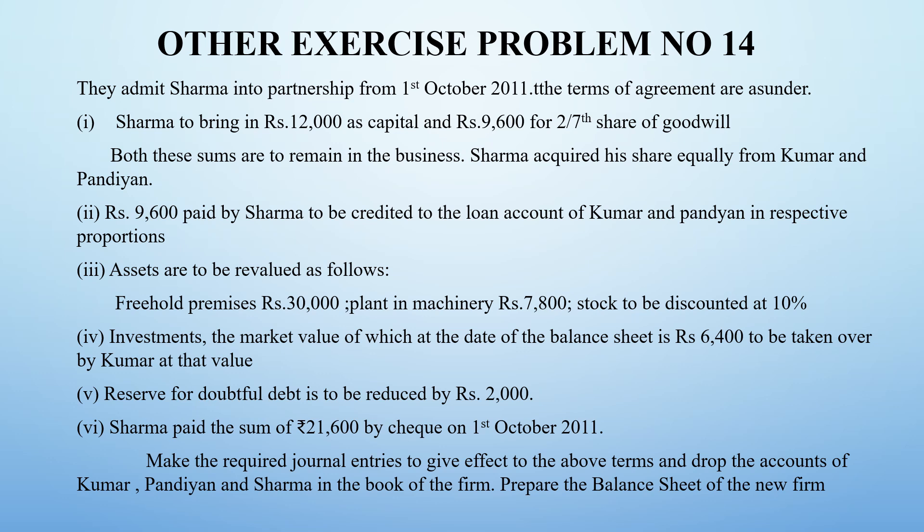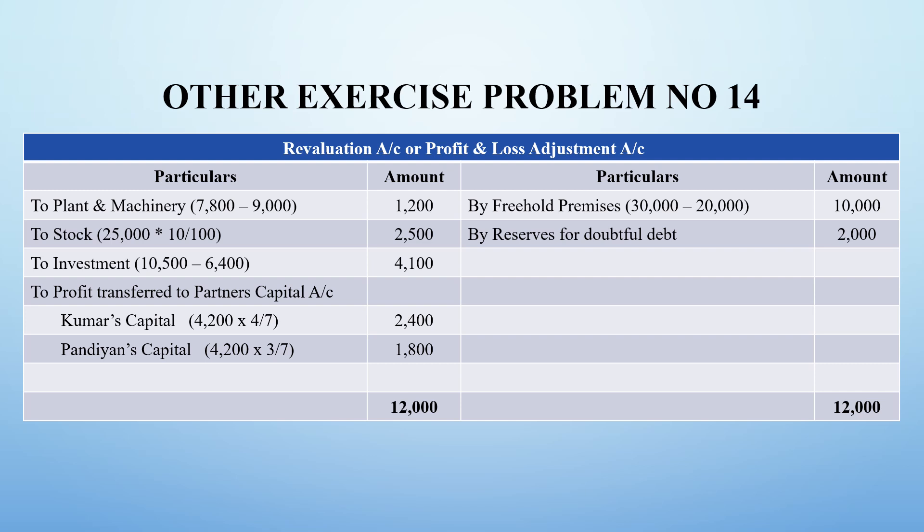So the investment is going out of the business through Kumar's capital account. Also, the reserve for doubtful debts is to be adjusted. Sharma paid a total sum of ₹21,600 by cheque on 1st October 2011 — that is ₹12,000 capital plus ₹9,600 goodwill. The first and foremost step is to prepare the revaluation account, also called the profit and loss adjustment account.